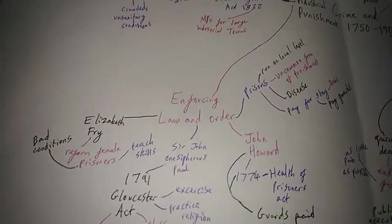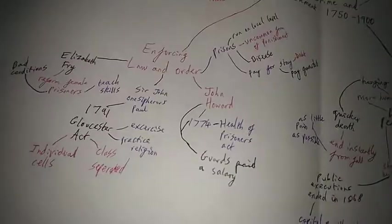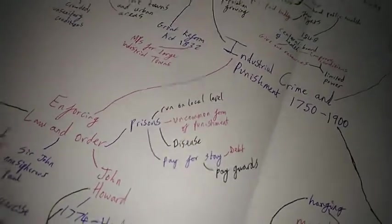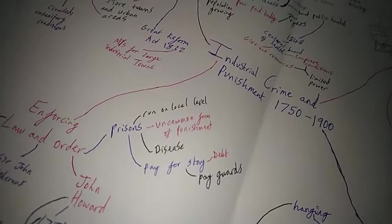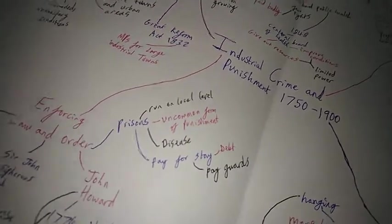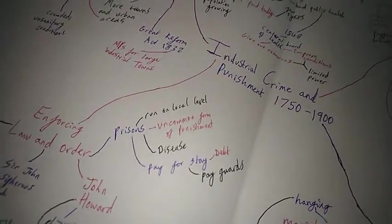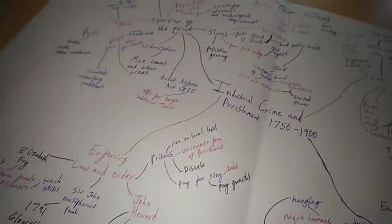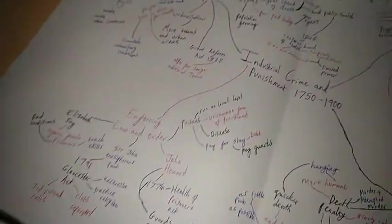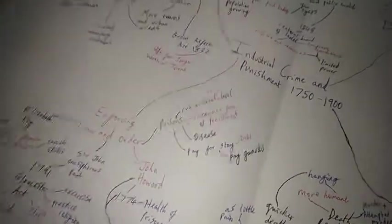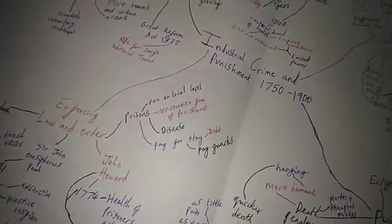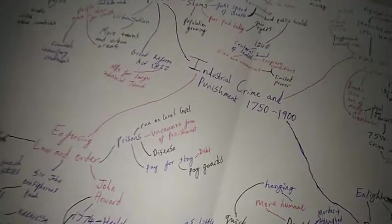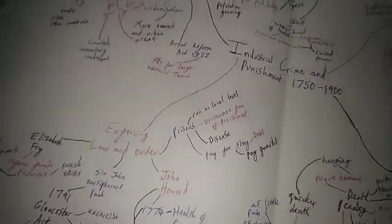Now we have enforcing law and order. As we know in the last one, jails were set up but now there are official prisons. They were running at a local level, it was an uncommon form of punishment. Prisons weren't that good, there was a lot of disease, you had to pay for your stay so there was a lot of debt. Guards were paid by the people who stayed in the prisons. Therefore guards would treat people staying there differently depending on how much they paid them. The fact that people would get into debt would just get them into more prison. Getting them out of prison to get them into prison again for debt just didn't make much sense.